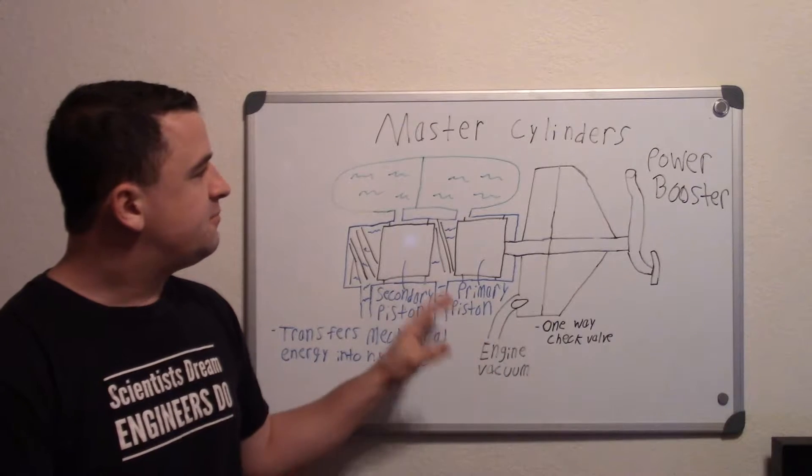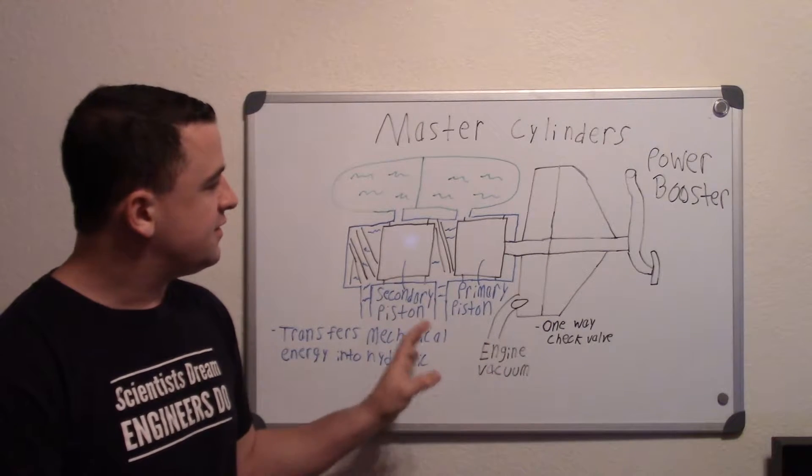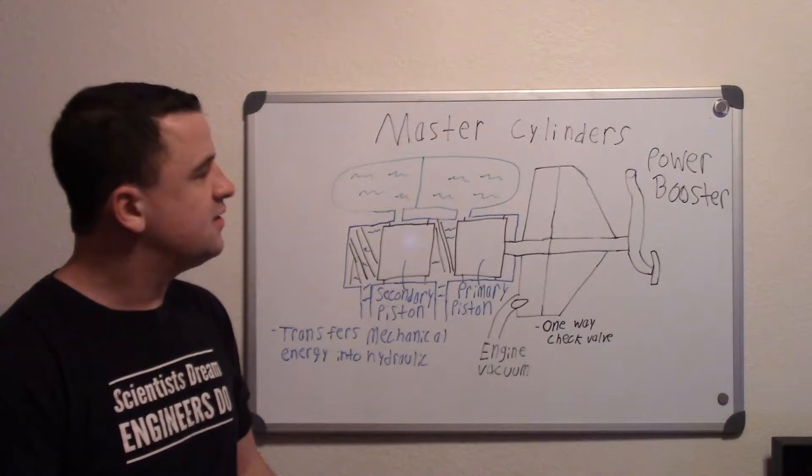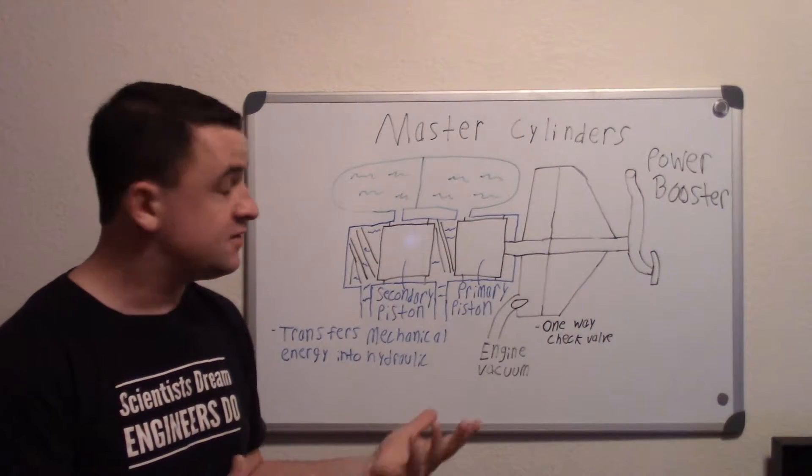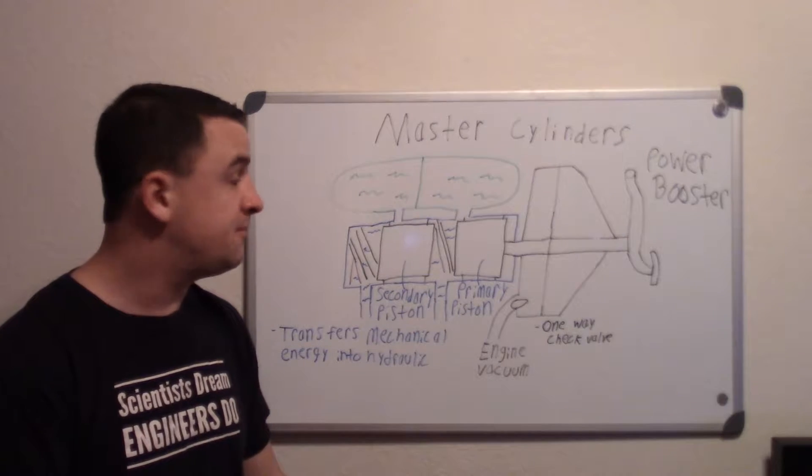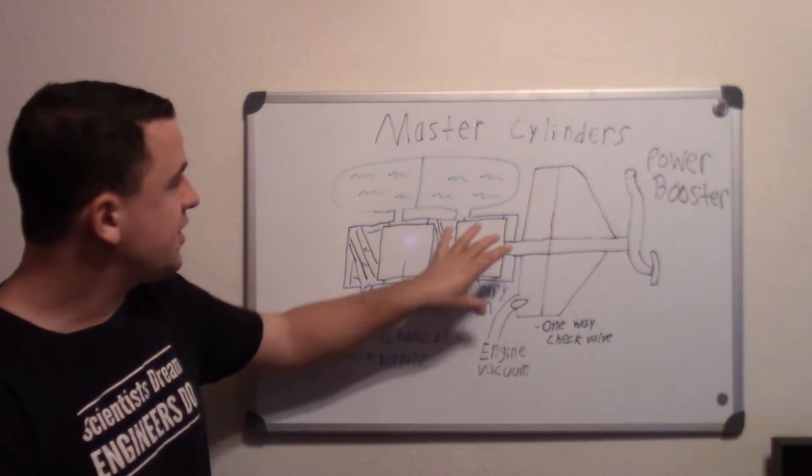So basically you've got a few parts here in these vacuum assisted ones. You have your power booster which is right here, that's your assistant source, that's what helps you pump the brakes. And here you've got your master cylinder.